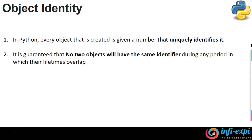Python ensures a guaranteed definition saying that no two objects will have the same identifier. It is guaranteed in such a way that in the lifetime of an object, that particular object will never overlap with another object's identity. Please be noted — this is all about objects, not about variables.